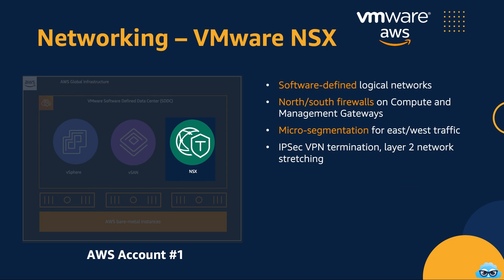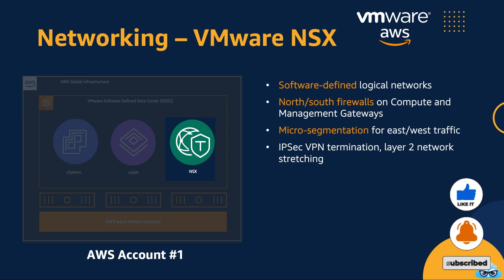In the uppermost layer of VMware Cloud on AWS, we encounter the NSX layer — an absolute game-changer in the world of networking. NSX is at the forefront of software-defined networking, transforming the traditional networking landscape by replacing hardware-based solutions with agile, software-driven infrastructure. Within NSX, there are compute and management software gateways that play a crucial role in routing north-south traffic, ensuring efficient communication between your VMware Cloud on AWS environment and the external world. NSX also enables micro-segmentation for east-west traffic, allowing you to apply fine-grained security policies, isolating workloads and enhancing security within your data center.